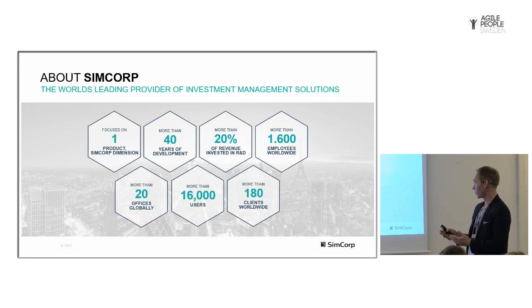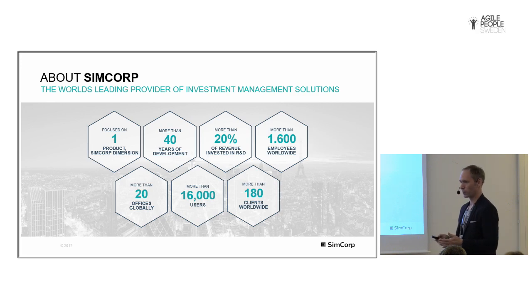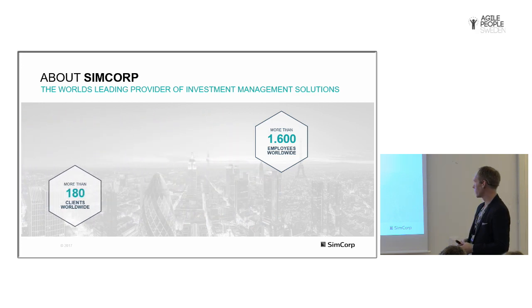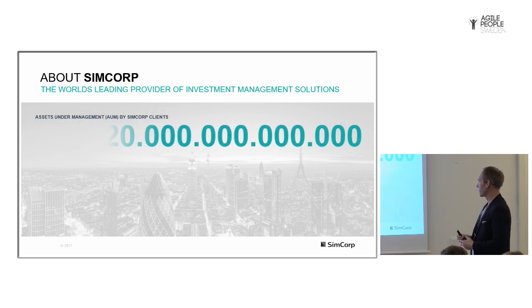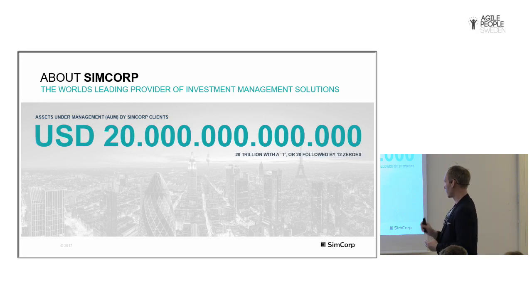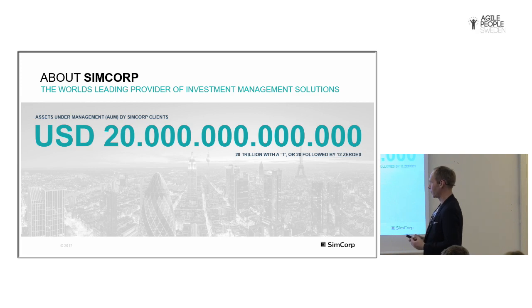You can ask: you've been in business for 40 years and you only have 180 clients — that's four and a half clients per year, what are you doing? So let me give you one big number to round off the introduction: assets under management by SimCorp clients totals 20 trillion US dollars — that's trillion with a T. That's basically what Dimension is used for — to manage stupendous amounts of money.